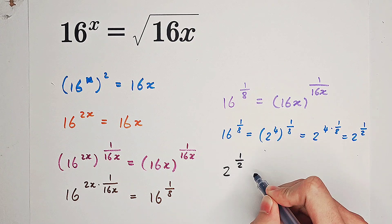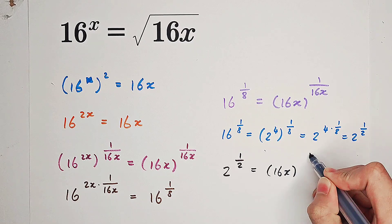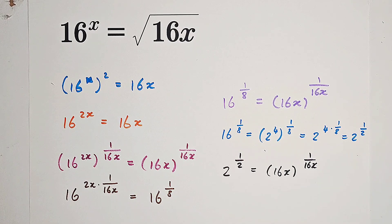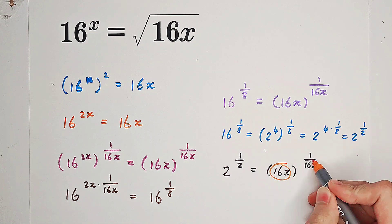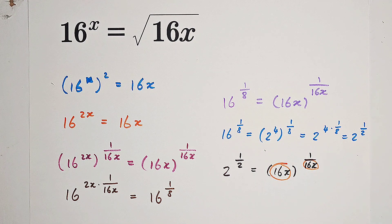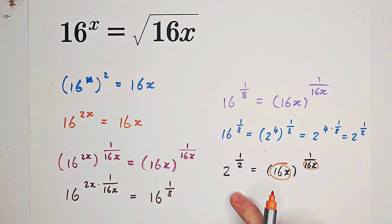The left hand side will be 2 to the power of a half and the right hand side is 16x to the power of 1 over 16x. We can actually substitute this 16x as something. Then you can see something to the power of 1 over itself equals 2 to the power of 1 over 2.